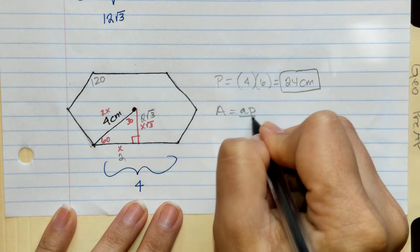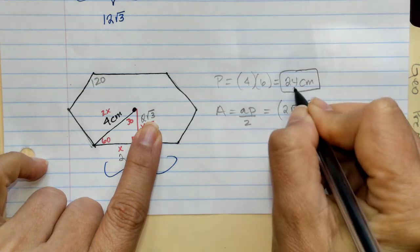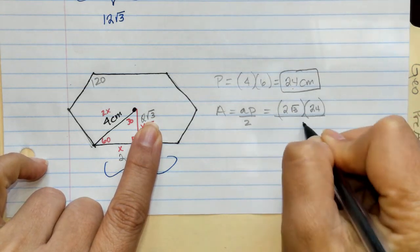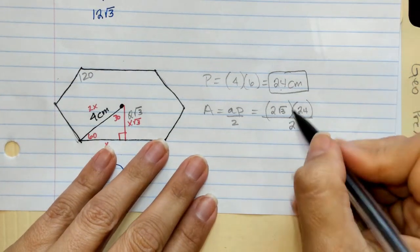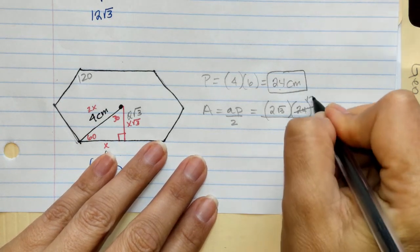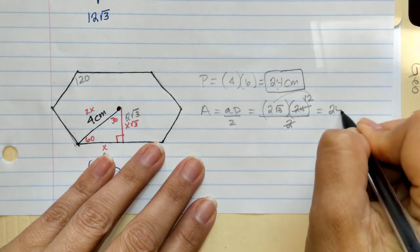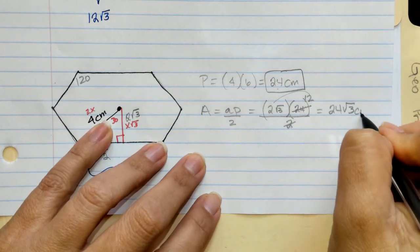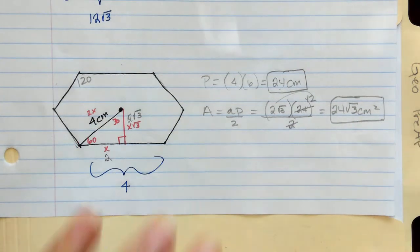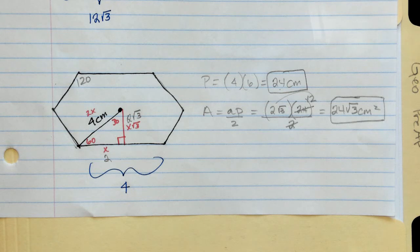For area, apothem times perimeter over 2: apothem is 2√3, perimeter is 24, all over 2. The 24 and 2 reduce to 12. 2 times 12 is 24√3 centimeters squared. For the sake of time I've talked rather quickly — if you need to pause the video, go back, or look at a particular problem, please feel free to do so.